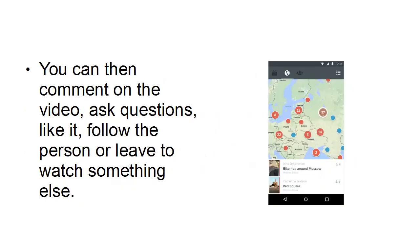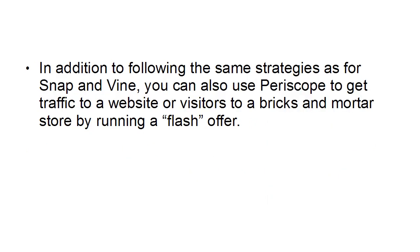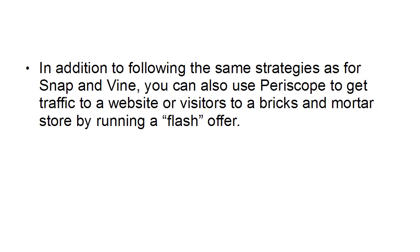You can comment on the video, ask questions, like it, follow the person, or leave and watch something else. In addition to the same strategies as for Snap and Vine, you can also use Periscope to get traffic to a website or visitors to a bricks-and-mortar store by running a flash offer. The geolocating feature means users can pinpoint where you are at that very moment.